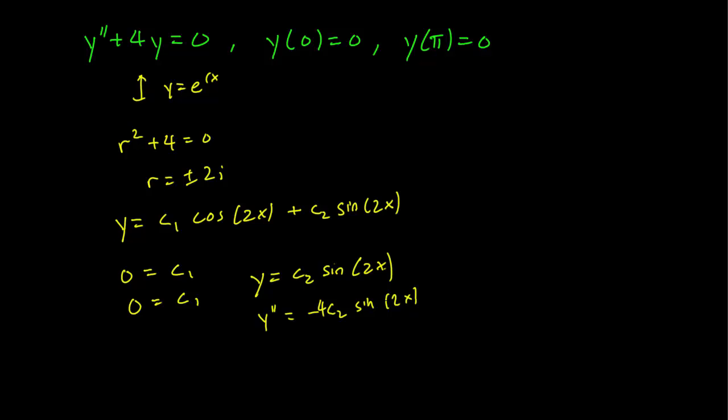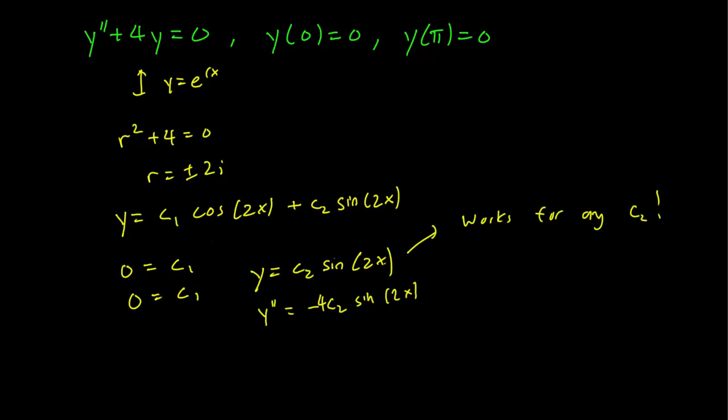It's clear that if you plug in this value for y'' and this value for y, that it doesn't matter what c₂ is, we have a solution. And what this comes down to is that even though we had two equations for our two constants, the two equations were the same equation. And that's why we couldn't eliminate all the constants.